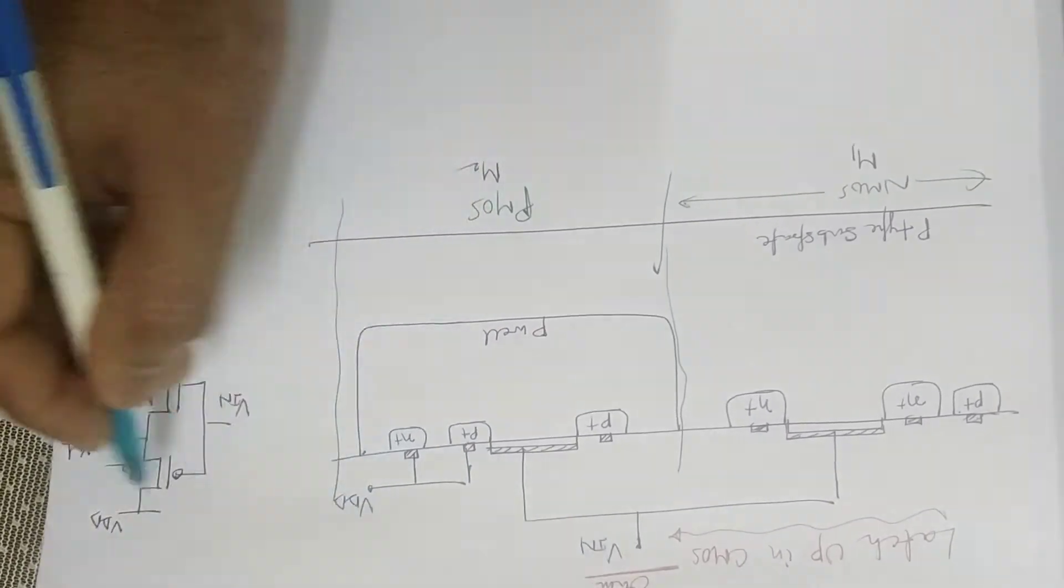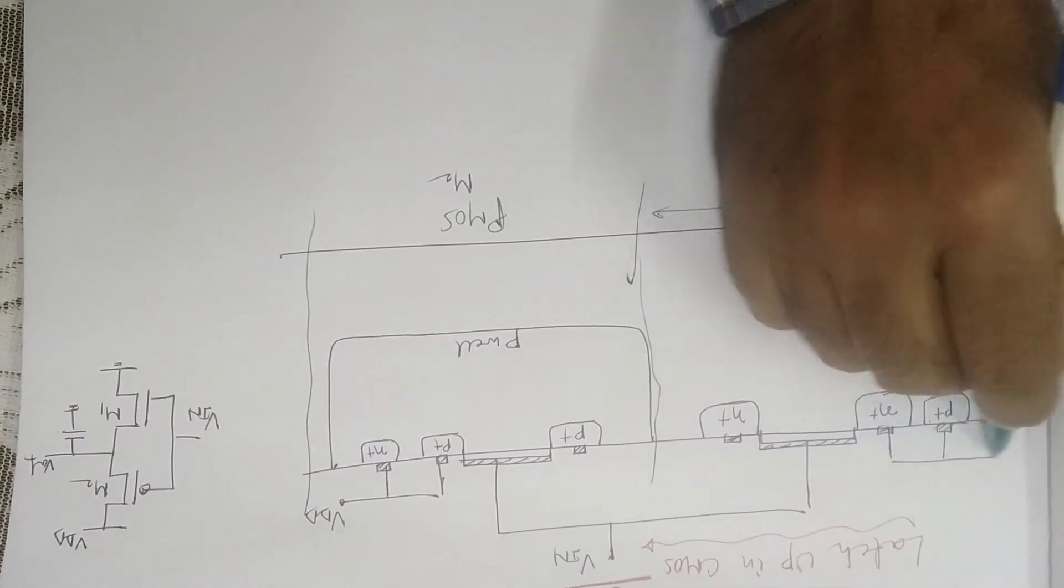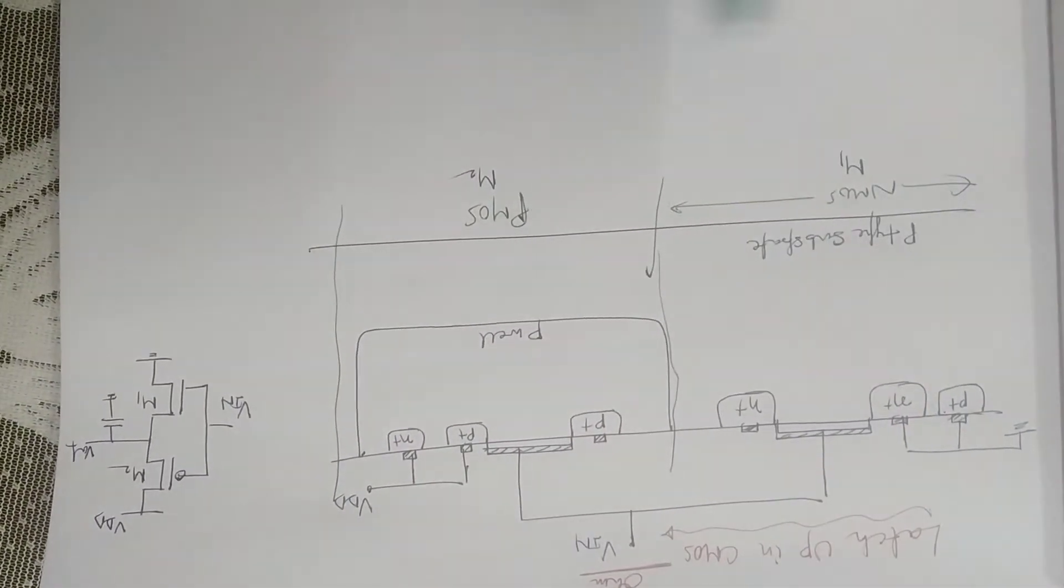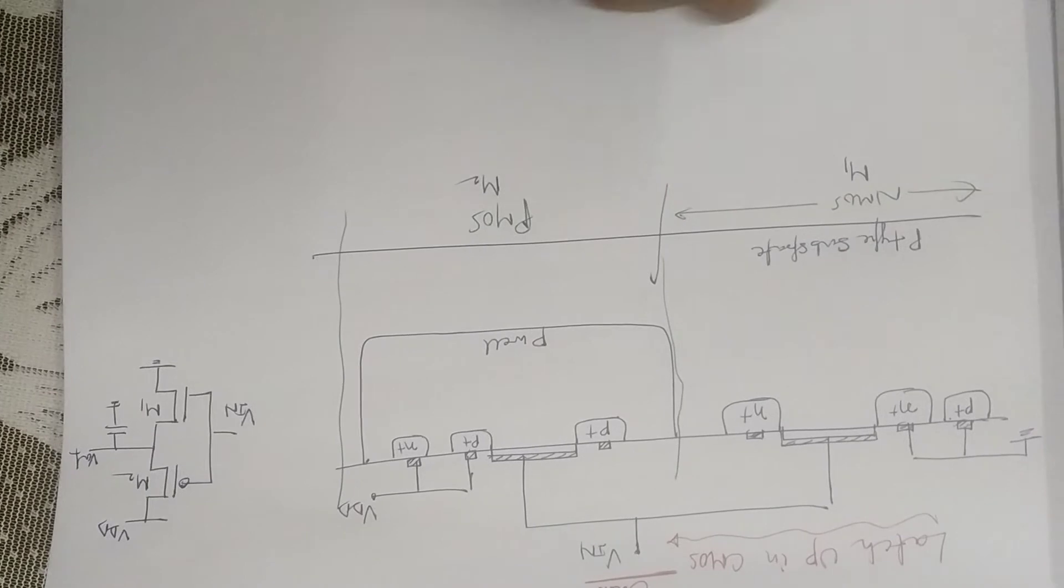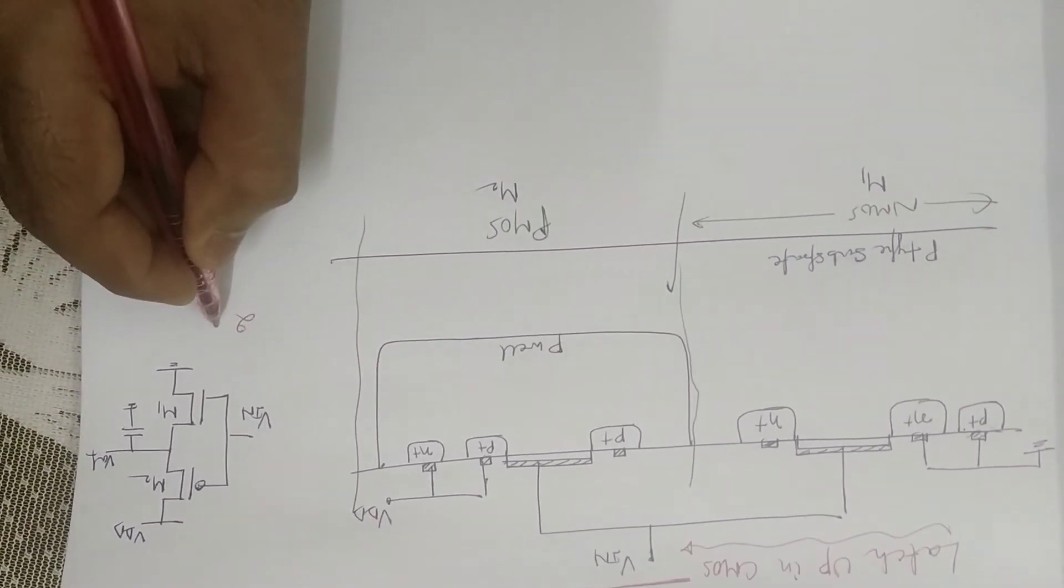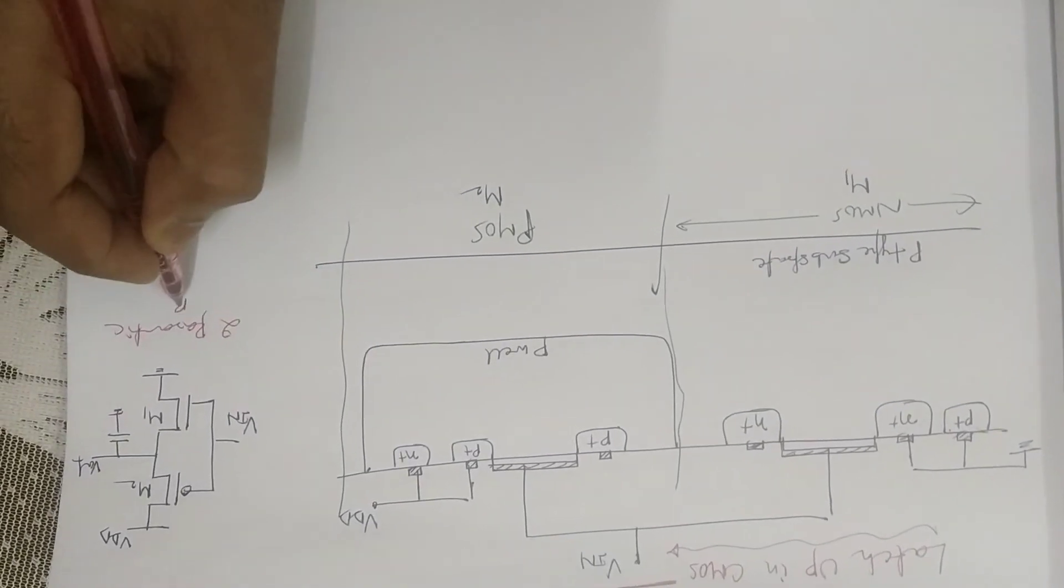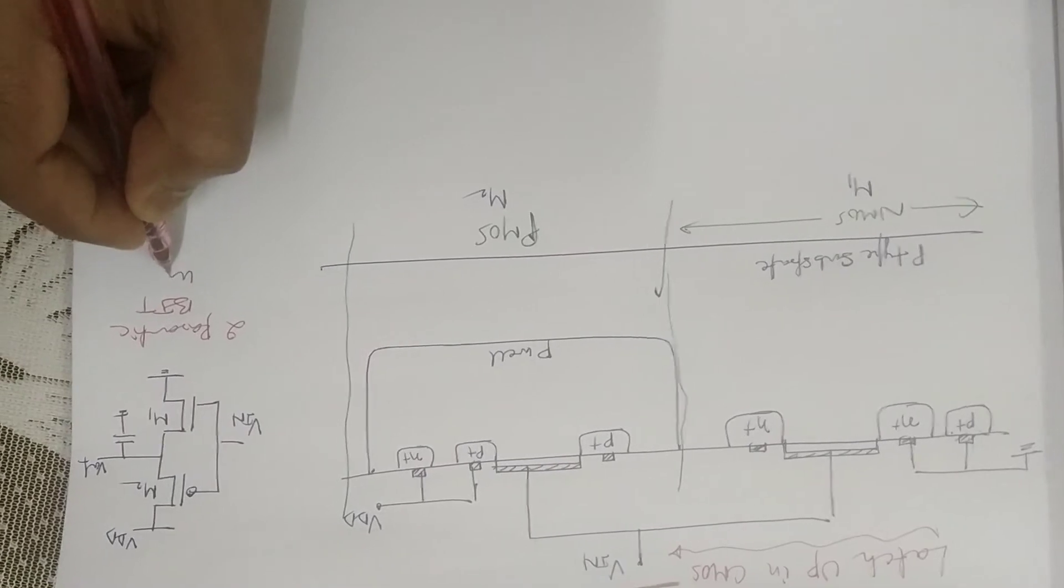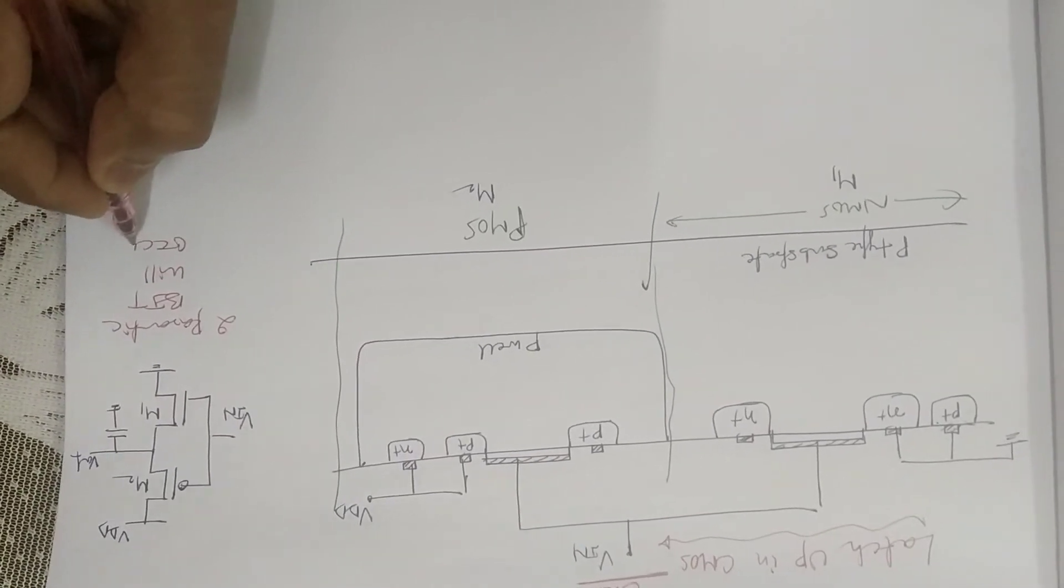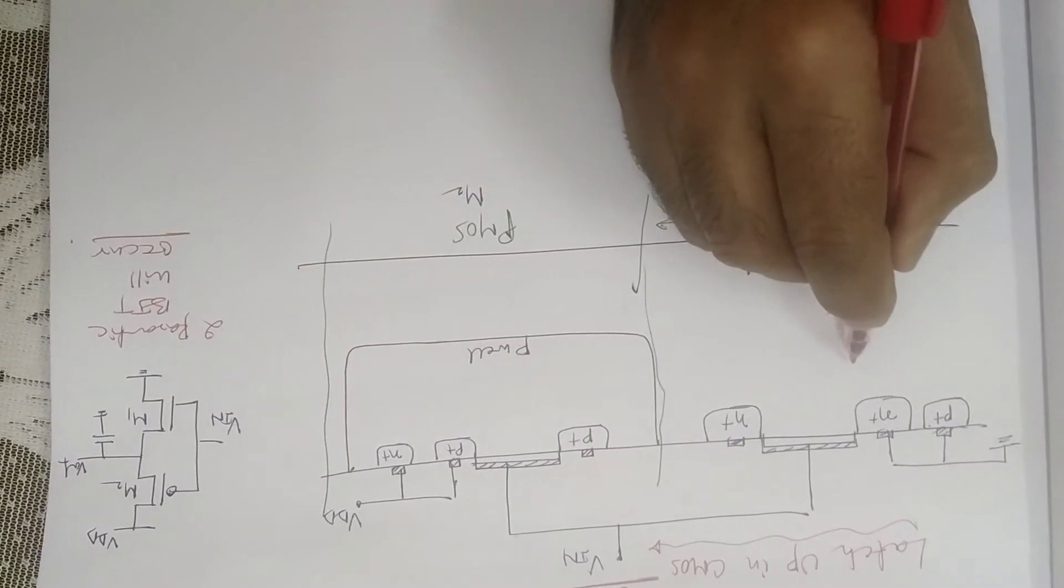We are saying that in CMOS two parasitic BJTs will occur. How? Just see how it will come.